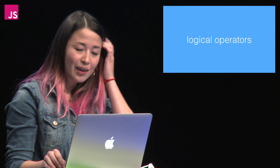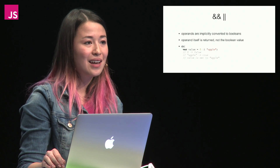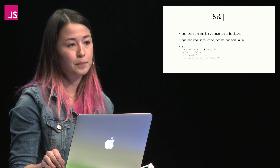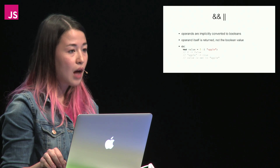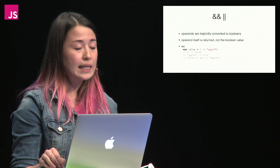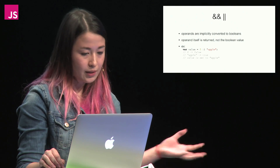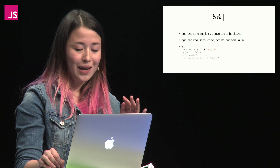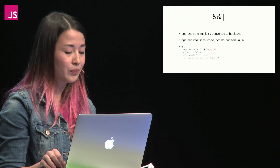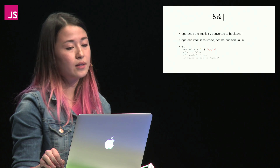Logical operators — and and or. Like the conditional operators, logical operators implicitly convert operands to Booleans depending on the context. But unlike the conditional operators, the operand itself is returned, not the Boolean value. This can be great for setting default values. In this example, var value equals zero || 'apple'. The or operator looks from left to right for the first true operand to return. Zero is converted to false, the string 'apple' is converted to true, and so value is set to the string 'apple'.